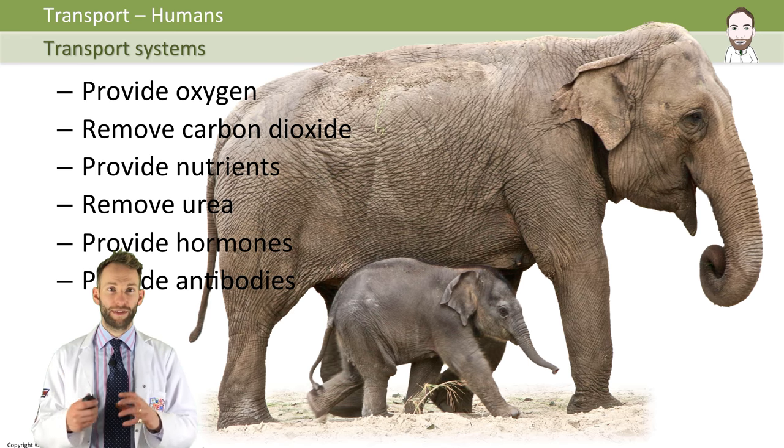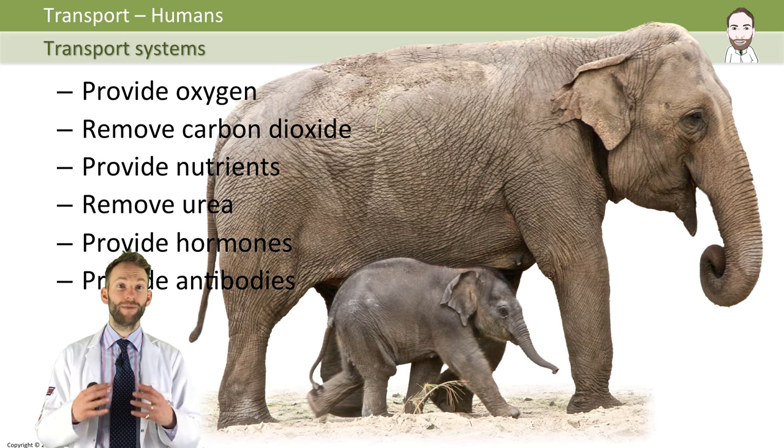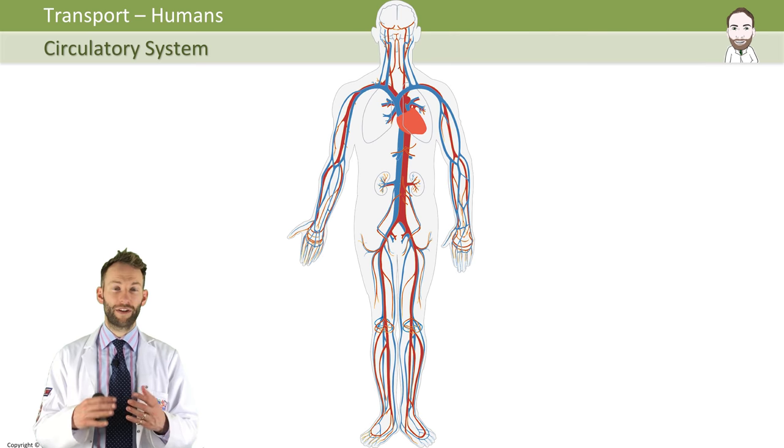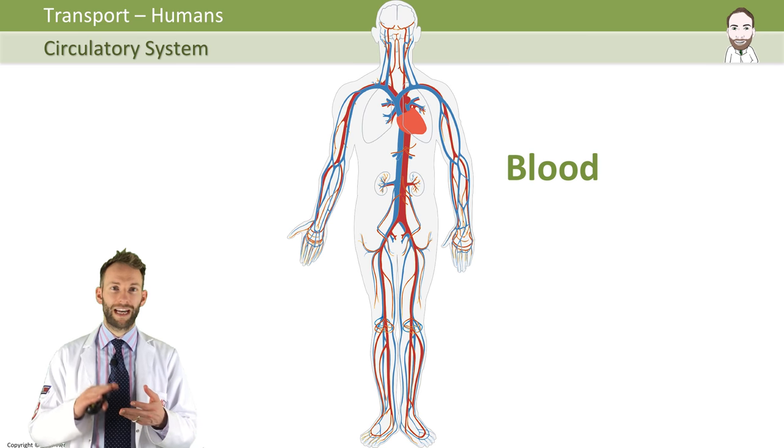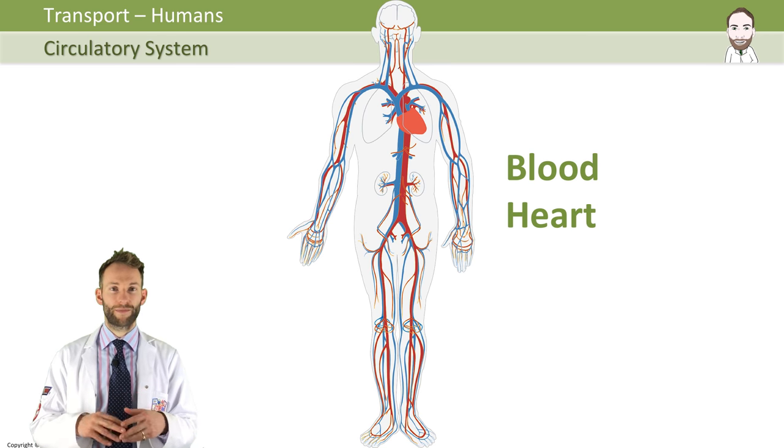Now we're going to be looking at humans. In the human circulatory system, there are three important components: blood, the heart, and blood vessels.